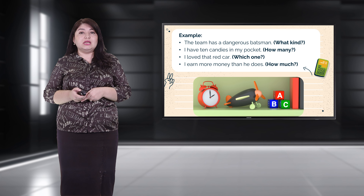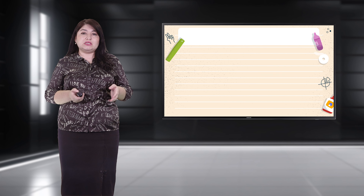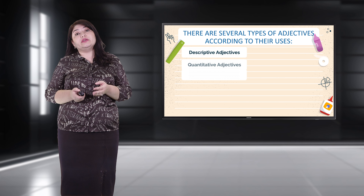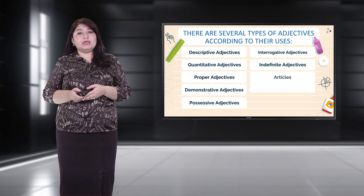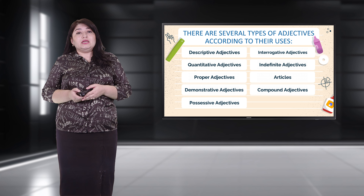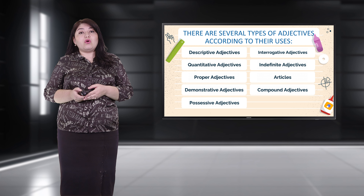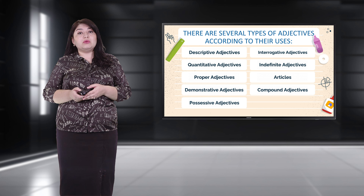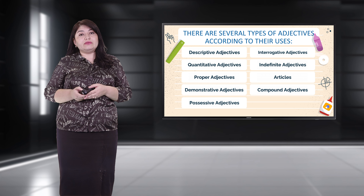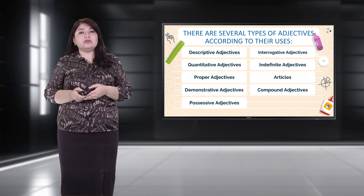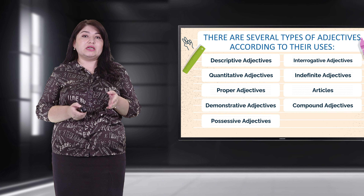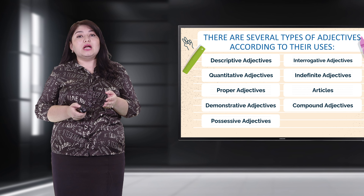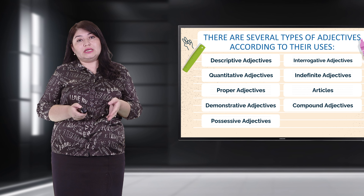Adjectives are the most used parts of speech in sentences. There are several types of adjectives according to their uses: descriptive adjectives, quantitative adjectives, proper adjectives, demonstrative adjectives, possessive adjectives, interrogative adjectives, indefinite adjectives, articles, and compound adjectives.